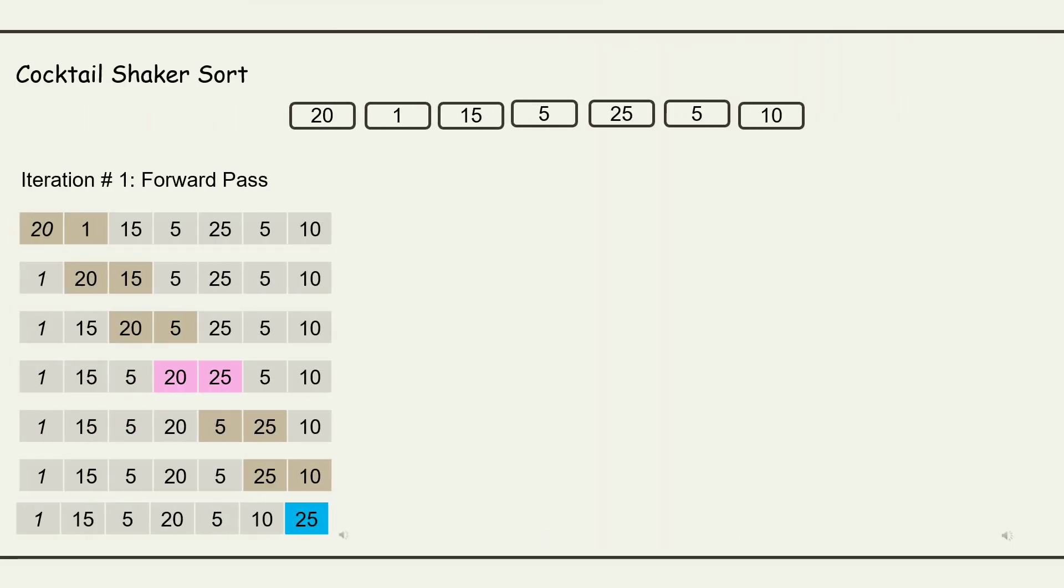The list of unsorted array here, which is 20, 1, 15, 5, 25, 5, and 10. In iteration number 1, forward pass.